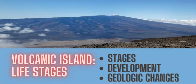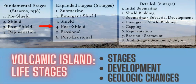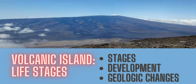A volcanic island can go through a distinct set of stages — from development on the ocean floor, through to an active volcanic island, to an extinct seamount with no more magma erupting. These stages can be broken into three basic stages, extended to four, or in this video expanded to eight stages, examining the characteristics and development all the way to a full-blown active volcanic island like the Big Island of Hawaii.